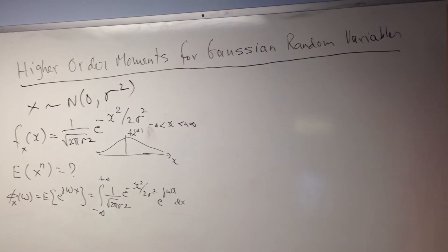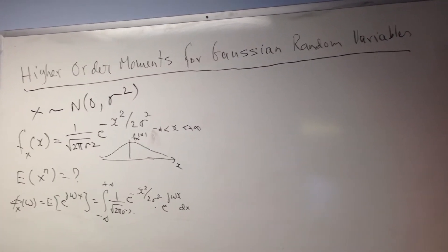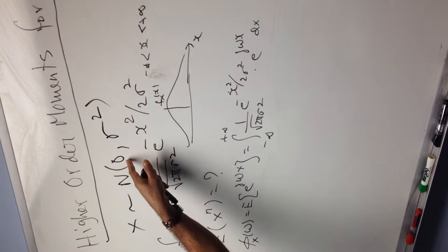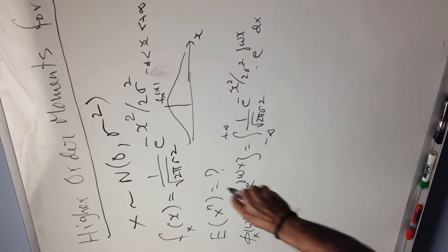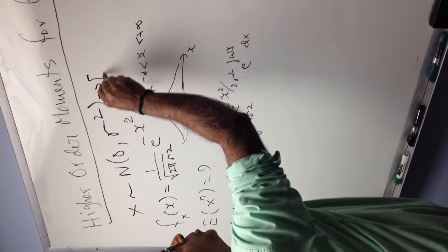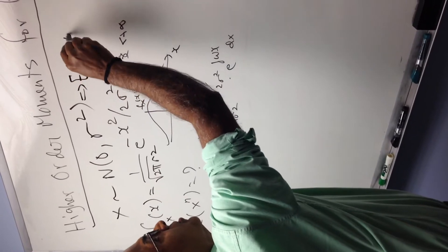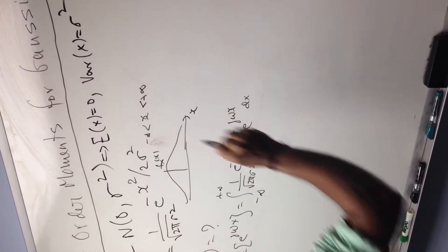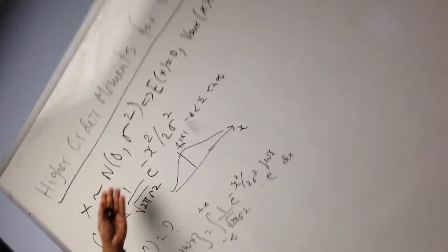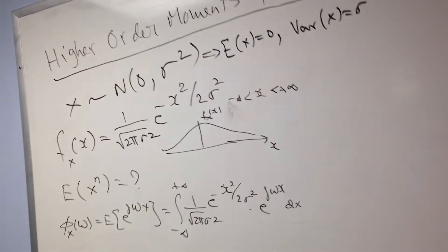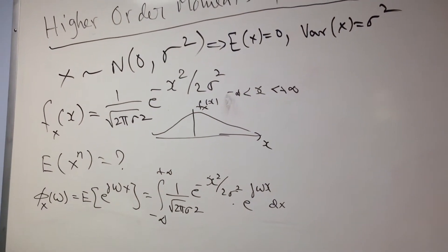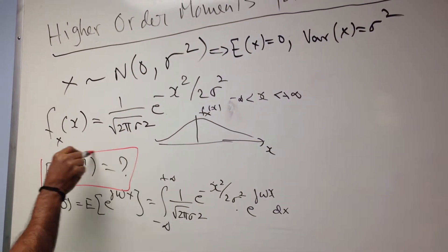I'm going to show you how to find the higher-order moments for Gaussian random variables. This is a very standard problem. The random variable X is Gaussian with zero mean and variance sigma squared. So the expected value of X is zero and the variance of X is sigma squared. The density function of X is this bell-shaped curve, and we want to find all the moments of the Gaussian random variable.